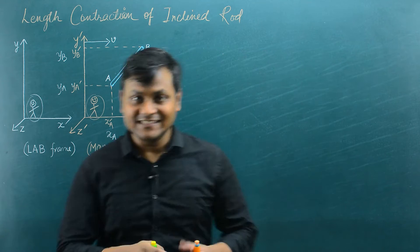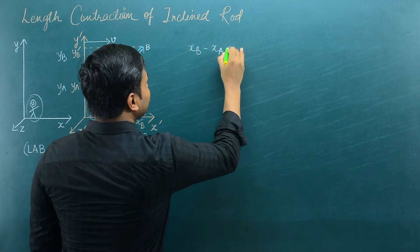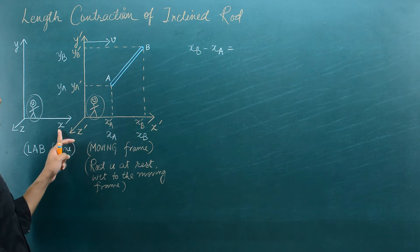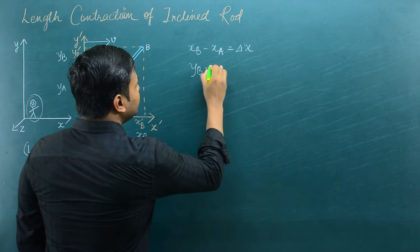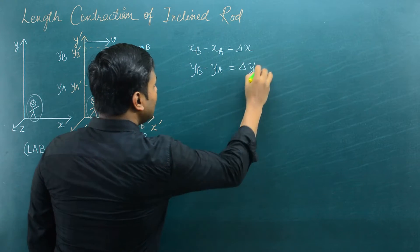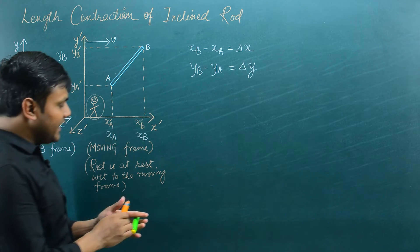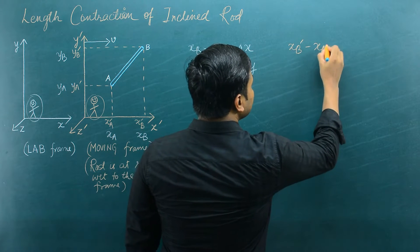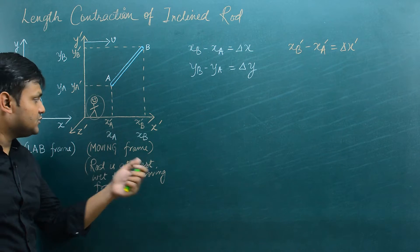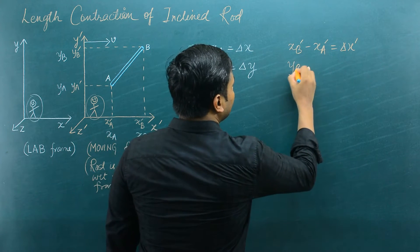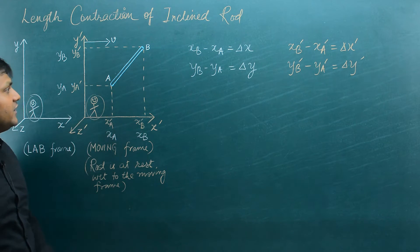I'm looking at the components of the length along the x and y axes. So x_b minus x_a is the component of the length along the x-axis for the observer in the lab frame, which I write as Δx. And y_b minus y_a, which I call Δy, is the component along the y-axis for the lab frame observer. Similarly, x_b dash minus x_a dash, which is Δx dash, is the component along the x-axis for the moving observer, and y_b dash minus y_a dash, which is Δy dash, is the component along the y-axis for the moving observer.